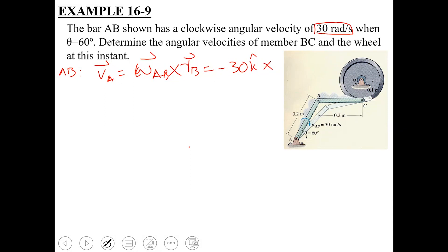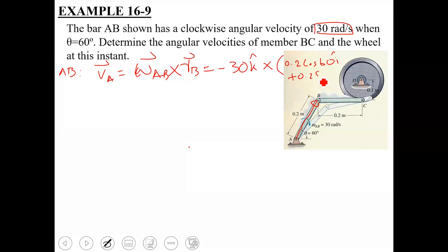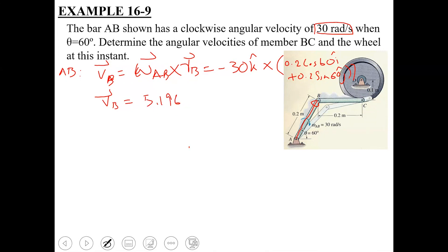The position vector R_B — the position of B with respect to ground point A — has magnitude 0.2 m at theta equals 60 degrees, giving components 0.2 cos60 i + 0.2 sin60 j. Both components are positive. Taking the cross product of omega_AB with R_B, the velocity of point B comes out to be 5.196i minus 3j meters per second.